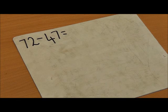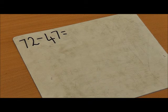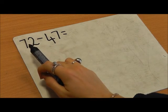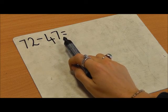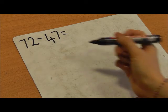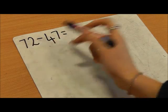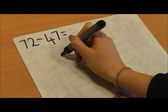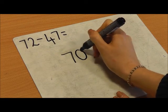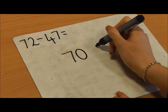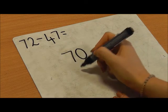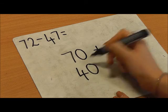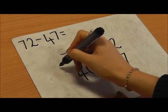Year 3 Partitioned Column Subtraction with Exchange. 72 take away 47. I'm going to rewrite my calculation, partitioning my tens and units from both numbers. So 72 becomes 70 and 2, and 47 becomes 40 and 7.